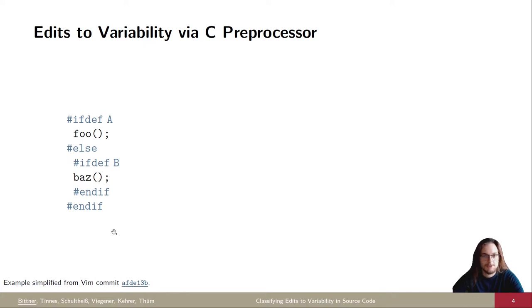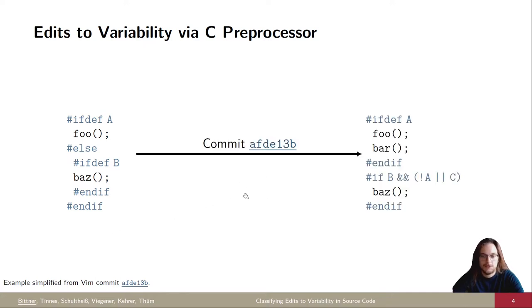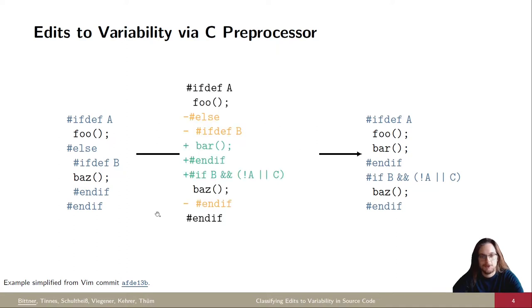And of course, the source code was edited and with commit, some changes were made. The typical view developers have in version control systems when looking at changes to source code is a text-based diff. You see that both source code was changed and preprocessor annotations were changed, but it's hard to differentiate both kinds of changes and how the changes affect variability of each part of a code base. So that's our goal.